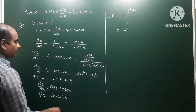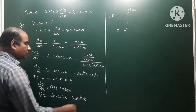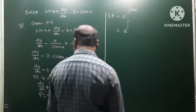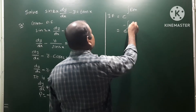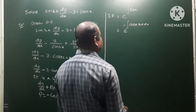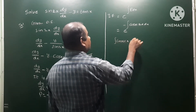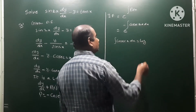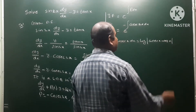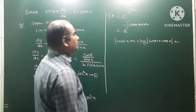So P(x) = −cosec x and Q(x) = (1/2)sec²x. To find IF, we need ∫cosec x dx. The formula is: ∫cosec x dx = log|cosec x − cot x| + C. We apply this formula here.